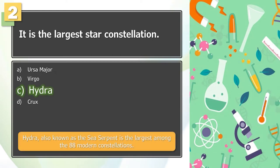The answer is D. Hydra, also known as the sea serpent, is the largest among the 88 modern constellations.